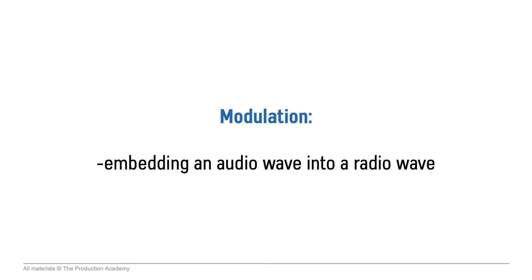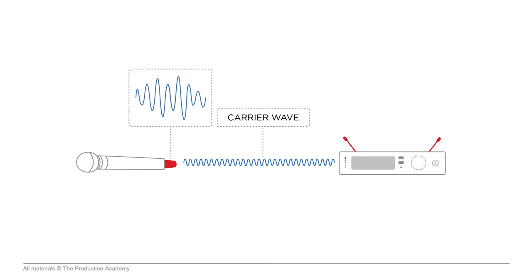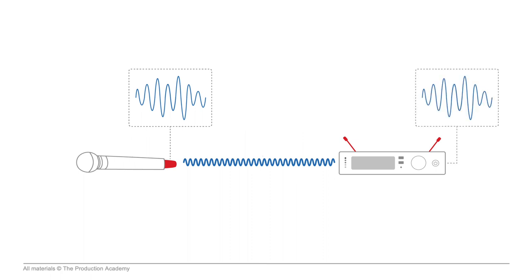Modulation is like embedding an audio wave into a radio wave. If we broadcast a radio wave at a specific frequency, which we call a carrier wave, we can use an audio signal to modulate this wave in a way that both the transmitter and receiver understand. Then the receiver can interpret that embedded information and convert it back into an audio signal. Both analog and digital wireless work this way.